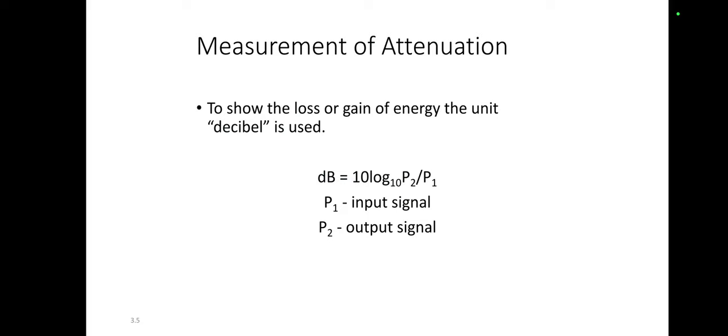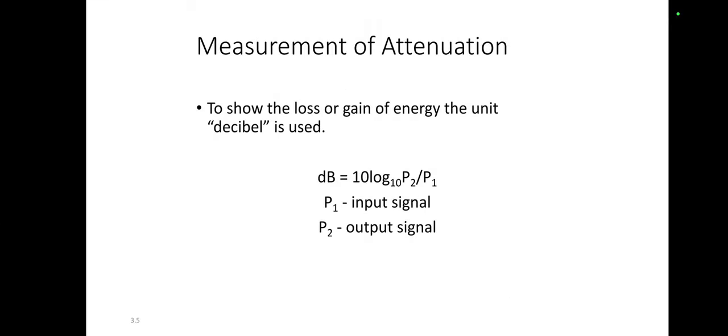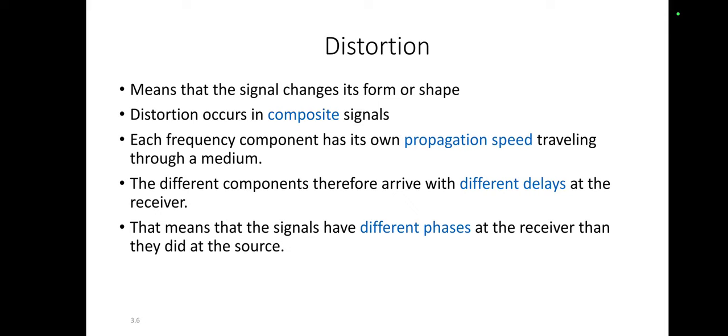To measure the loss or gain of energy, the unit required is the decibel, represented as: dB = 10 log₁₀(P2 / P1), where P1 is the input signal power and P2 is the output signal power.